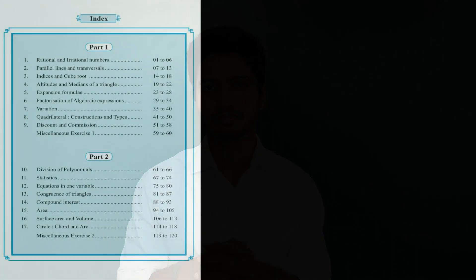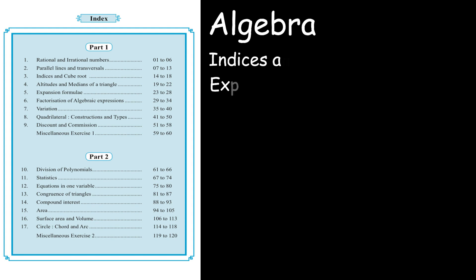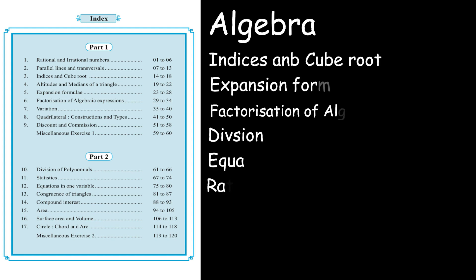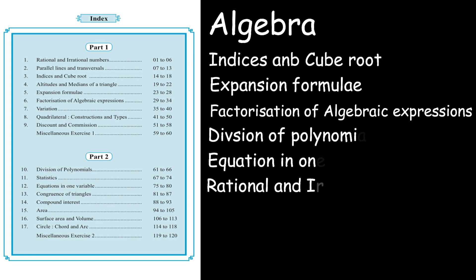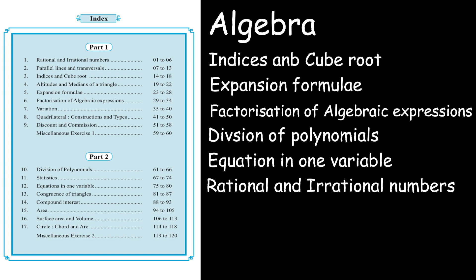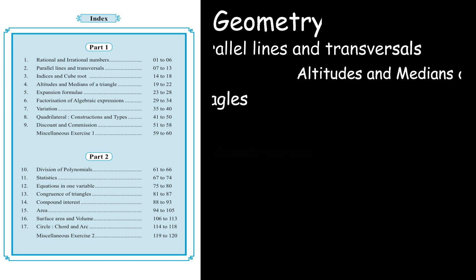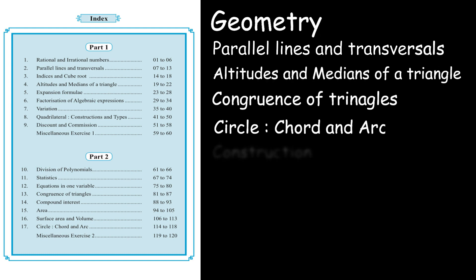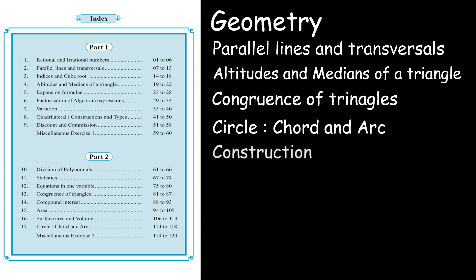Let's go through the index of your maths book: indices and cube root, expansion formula, factorization of algebraic expressions, division of polynomials, equations in one variable, and rational and irrational numbers — all these chapters come under algebra. Chapters like parallel lines and transversals, altitudes and medians of a triangle, congruence of triangles, circle, chord and arc — all these chapters come under geometry.